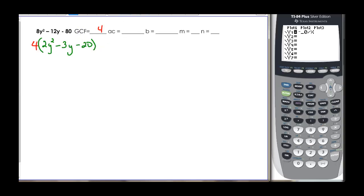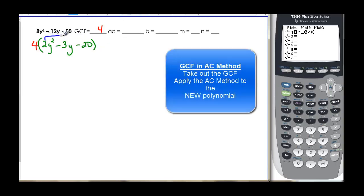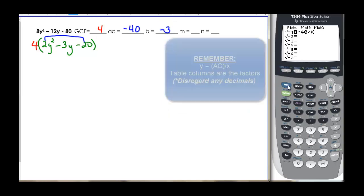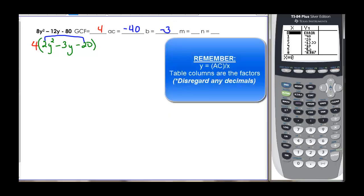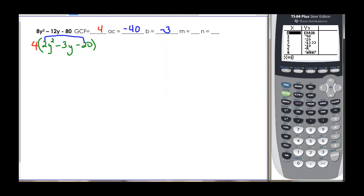So when I think about my AC, I'm going to take the 2 times the negative 20, which is negative 40. And my b is going to be my negative 3. And so I come over to my calculator. And I've already put in the negative 40. So we're ready to go look at the table. And I'm trying to add up to negative 3. Well 1 and this would be 39. 2 and negative 20 would be negative 18. 4 and negative 10 would be negative 6. 5 and negative 8 would be negative 3. So there they are. We have a negative 8 and a positive 5.